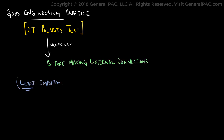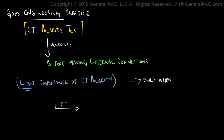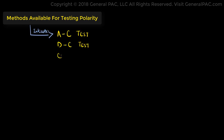The only case where CT polarity is of least concern to us is when we connect the CT to non-directional relays. There are various methods available to test a transformer's polarity. Some of the more common ones include the AC test, the DC test, the current method, and the phase angle method.